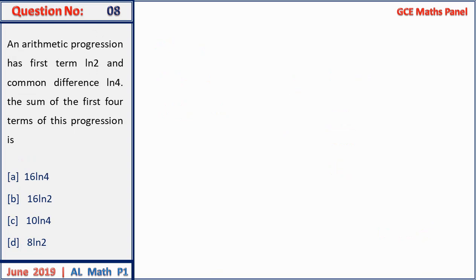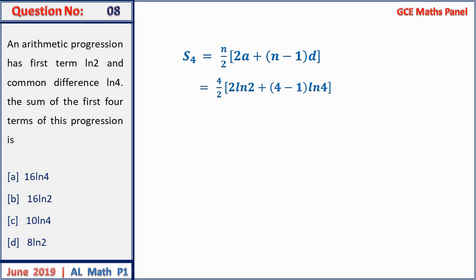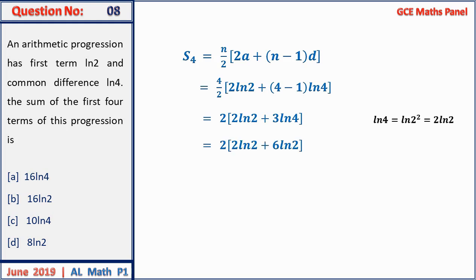Question 8: an arithmetic sequence with first term ln 2 and common difference ln 4. The sum of the first four terms uses the formula S_n = (n/2)[2a + (n−1)d]. With a = ln 2, d = ln 4 = 2 ln 2, we get 2(2 ln 2 + 6 ln 2) = 2 × 8 ln 2 = 16 ln 2. Wait — simplifying gives 2(2 ln 2 + 3 ln 4) = 2(2 ln 2 + 6 ln 2) = 16 ln 2, which is B.